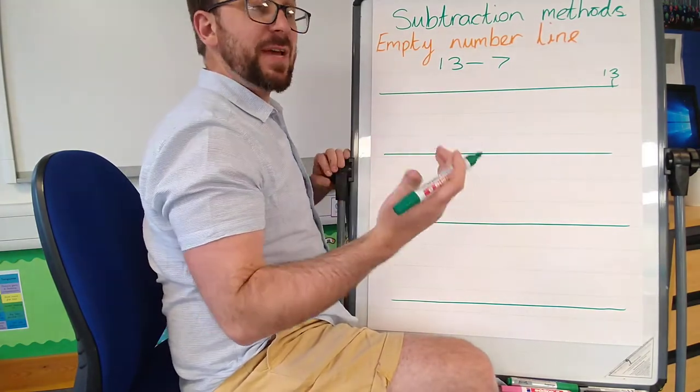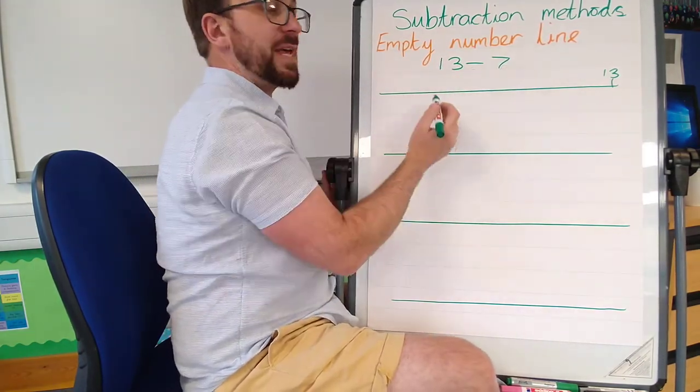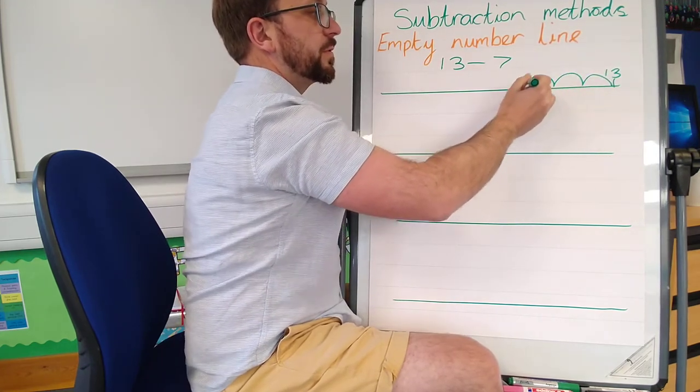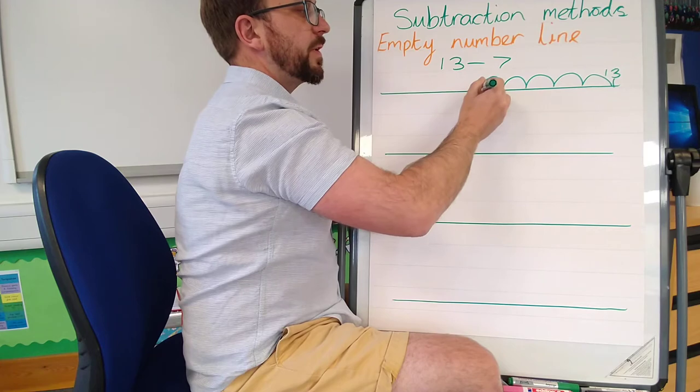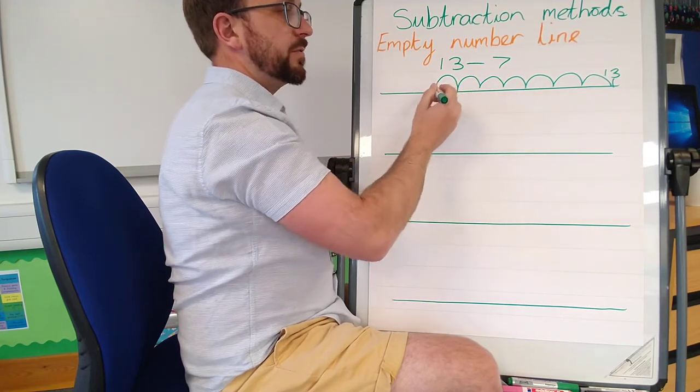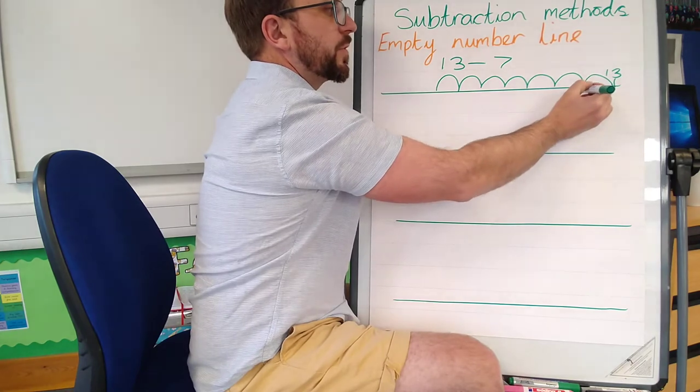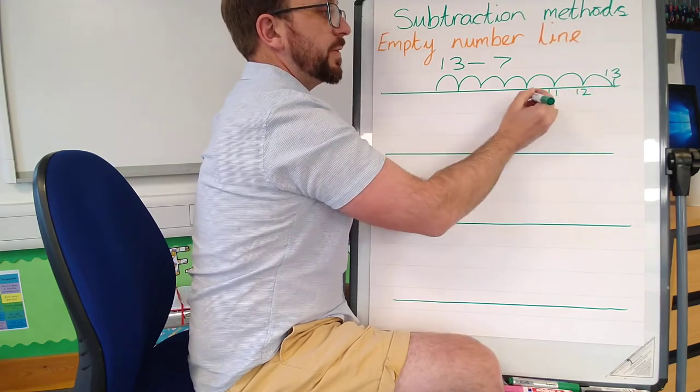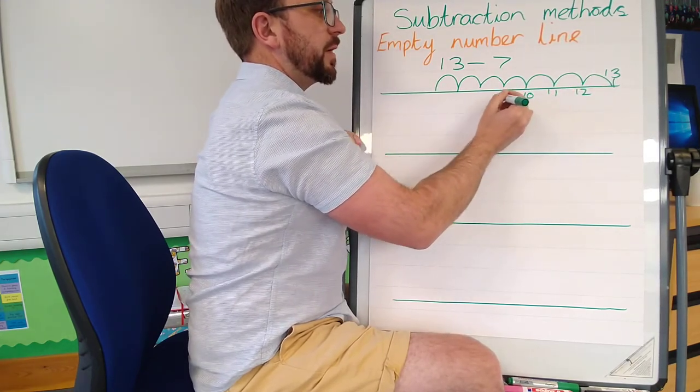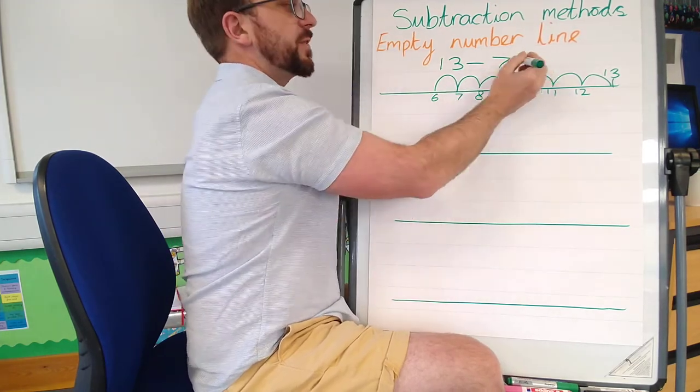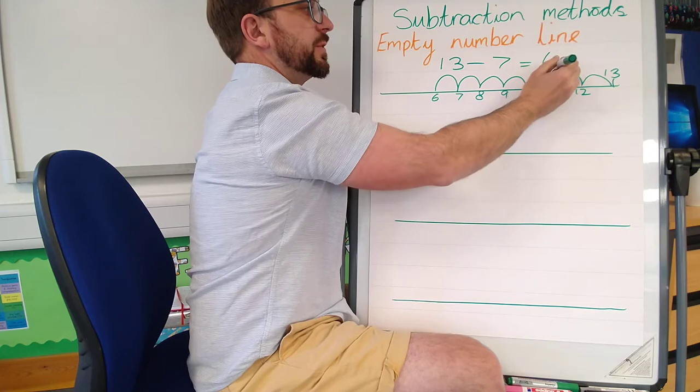So if I'm going to count 7 back: one, two, three, four, five, six, seven. Now filling in those missing numbers: 13, 12, 11, 10, 9, 8, 7, 6. So 13 take away 7 equals 6.